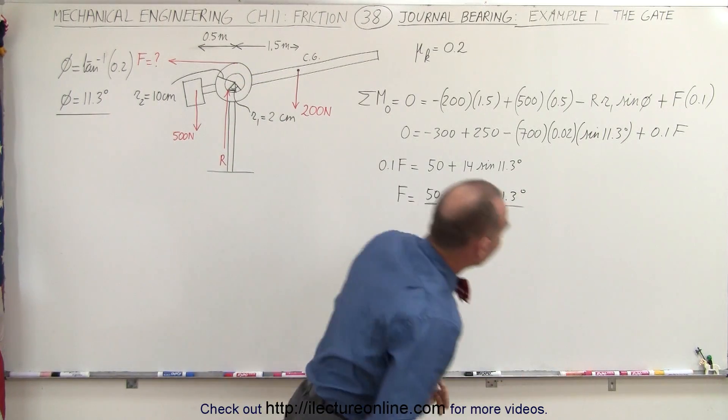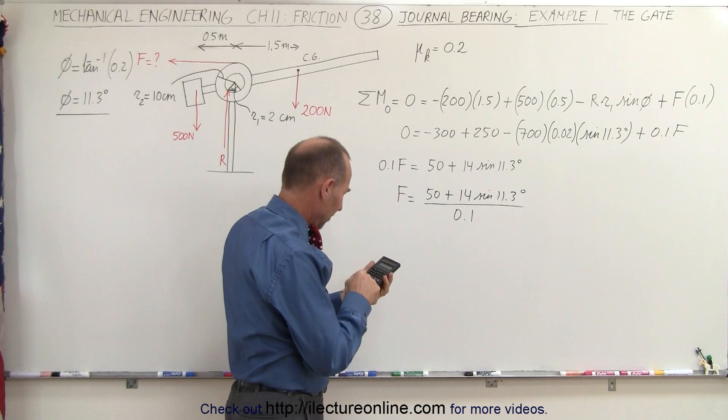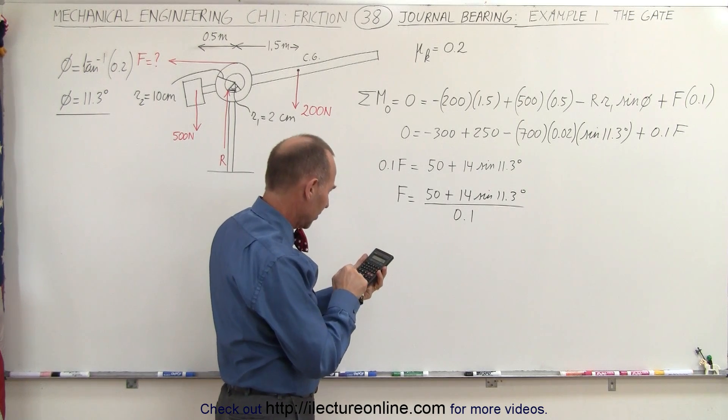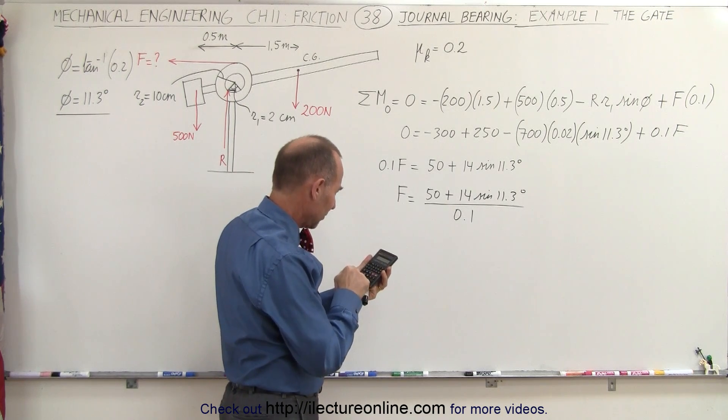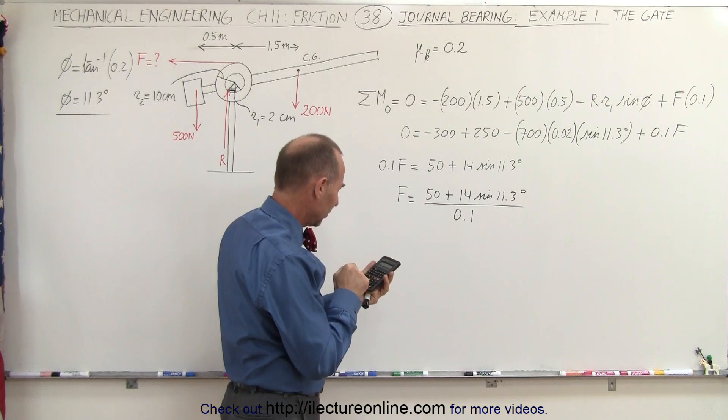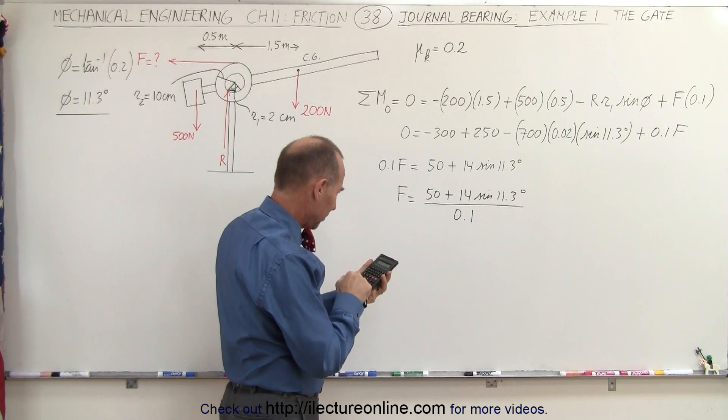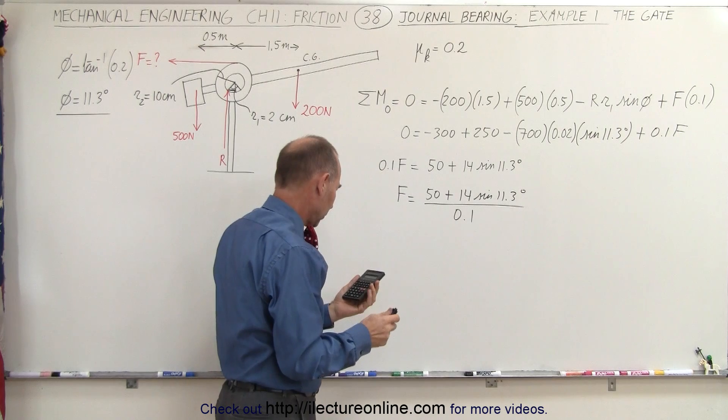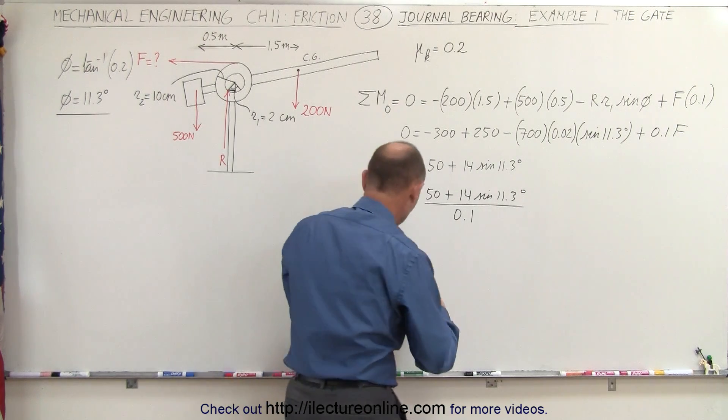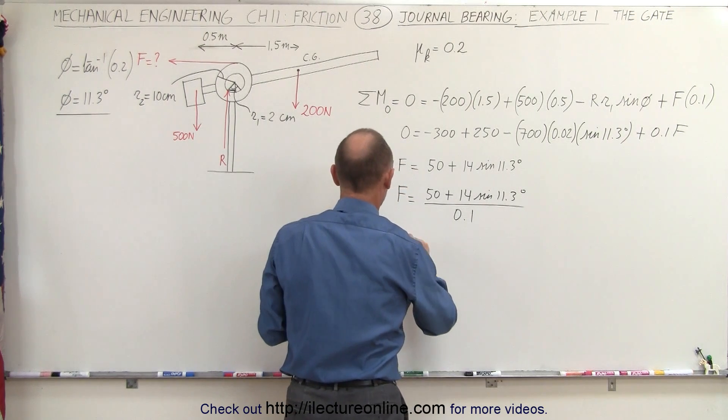Now we're ready to find the force required. So we have 50 plus 14 times the sine of 11.3 degrees, divide by 0.1, and so the force required would be somewhere around 527 newtons.